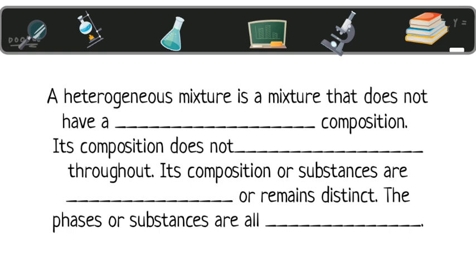A heterogeneous mixture is a mixture that does not have a uniform composition. Its composition does not blend throughout. Its composition or substances are distinct or remain distinct. The phases or substances are all visible.